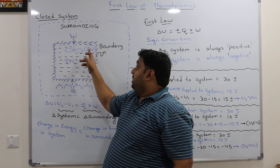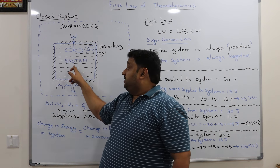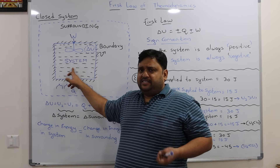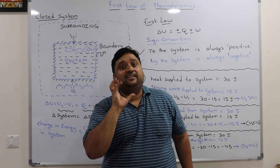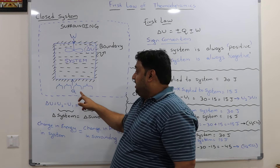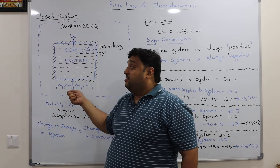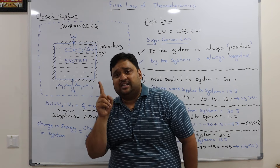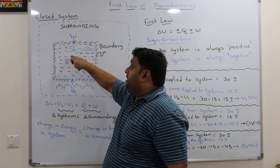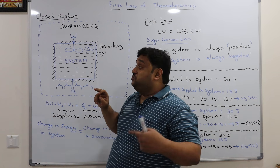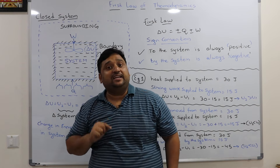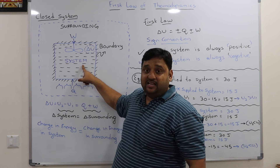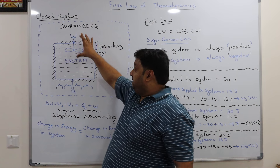If you draw a boundary, within the boundary is your system and outside the boundary is the surroundings. Now, if I want to change the internal energy — say I want to increase it — what can I do? I can either supply heat through burning, or I can do some work on the system, like using a stirrer inside the system. Rotating the stirrer sends work energy into the system, and heat energy going into the system will also change the internal energy. U represents internal energy, and I can change it either by supplying heat or by supplying work.